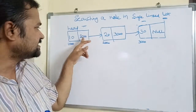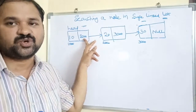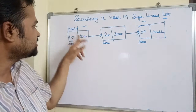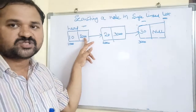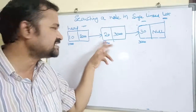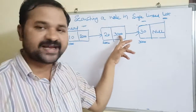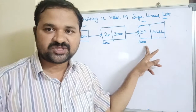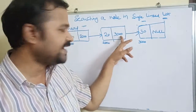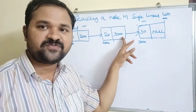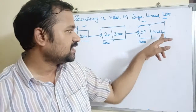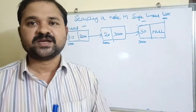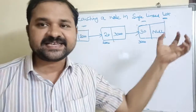The data of the first node is 10, data of the second node is 20, and data of the third node is 30. The next field contains the address of the next node, so 2000 is stored in the first node's next field, forming a link to the second node. 3000 is stored in the second node's next field, linking to the third node. The last node's next field contains None, indicating the end of the linked list.